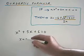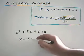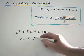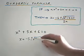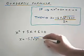So minus b, minus 5, plus or minus the square root of b squared, that's 5 again.